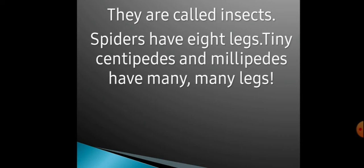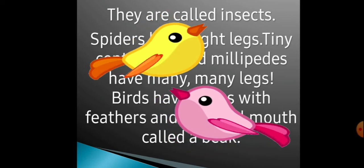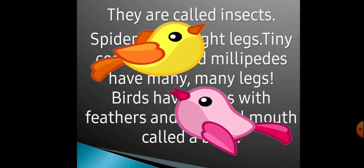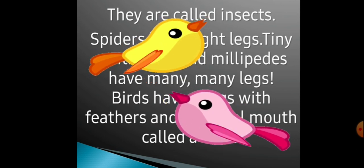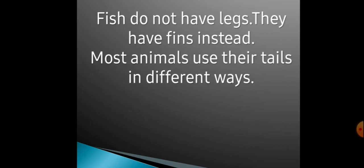Birds have wings with feathers and a special mouth called a beak. Jo bird hai, unko wings hote hain, aur special mouth, matlab unki jo chonch hai, unko beak bola jaata hai. Fish do not have legs; they have fins instead. Matlab jo fish hai, unko legs nahi hote, unko fins hoti hain.